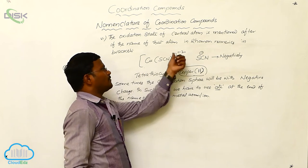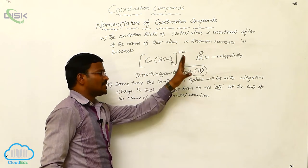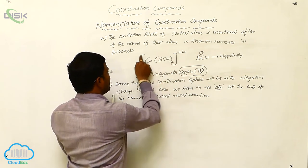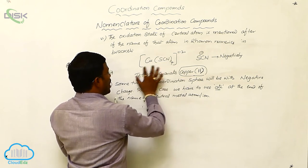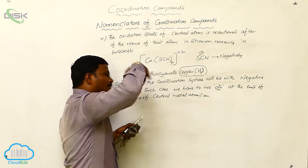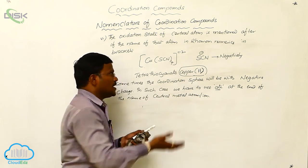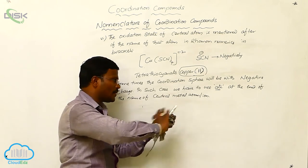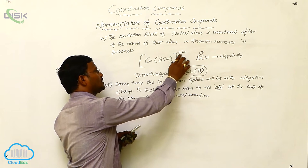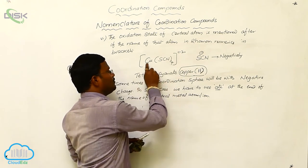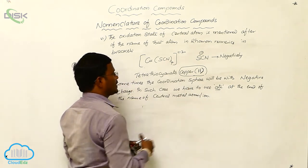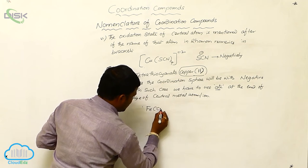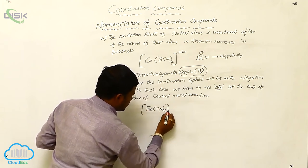Sometimes the coordination sphere will have negative charge, sometimes it is with positive charge. This is the coordination sphere which is indicated with square brackets. Outside of the square bracket, the coordination sphere may be with positive or negative charge. If it is positive charge, the name is written in common format, but if the coordination sphere has negative charge, then at the end of the metal atom name we have to use '-ate'. For example, Fe(CN)6 minus 4.